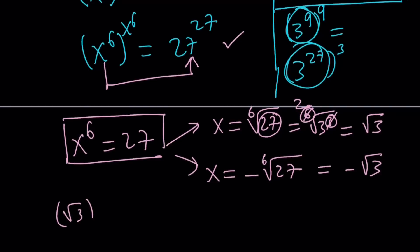So, when you raise square root of 3 to the 6th power, you're going to do the following. This is going to be square root of 3 times square root of 3 times square root of 3. You're going to write it 6 times. These are going to be 3s. And that's going to give you 27. So, it works.